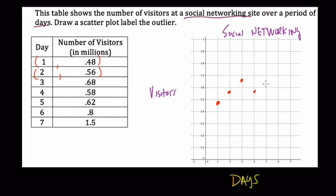5.62, 6 is 0.8, and then 7 is 1.5, which is actually beyond the scope of the graph I set up, probably even up here.